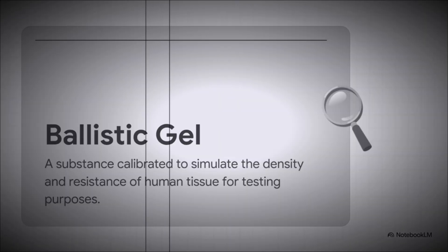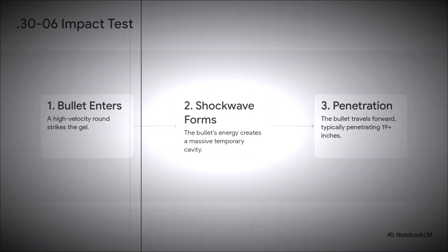So, how can we actually see this incredible energy transfer in action? Well, investigators use something called ballistic gel. It's this special substance that's designed to mimic human tissue perfectly, so they can see exactly what a bullet does when it hits a body. And when a .30-06 round hits this gel, it doesn't just poke a clean hole through it. It creates this enormous shockwave, this temporary cavity, and it just keeps going, penetrating for nearly 20 inches.